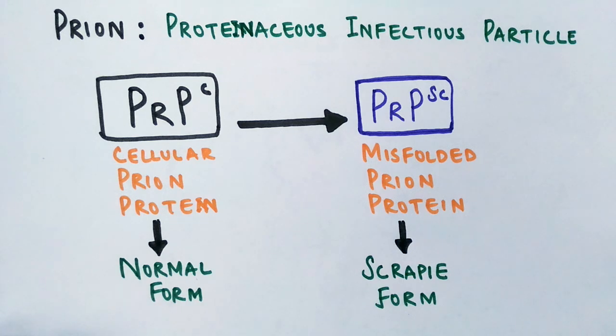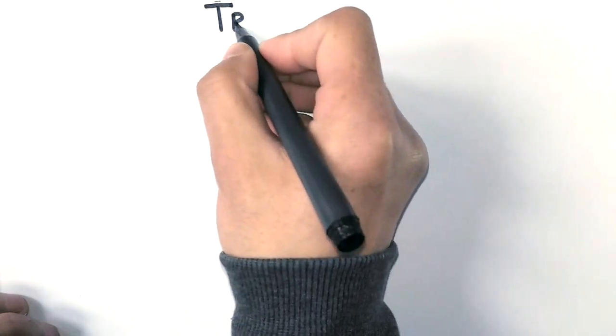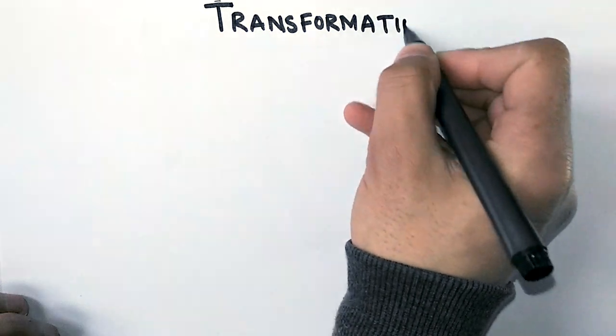Now we will see how this PrP^C form, that's the normal form of prion protein, gets transformed into a scrapie form, that's the abnormal type which is lethal to the other cells.